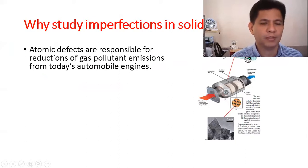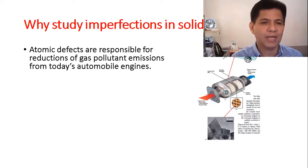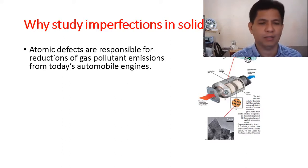So why do we need to study the imperfection in solids? Although the term imperfection sounds negative, basically the function of some materials depends on the imperfection. One example is the catalyst used in a catalytic converter in automotive vehicles. Atomic defects are responsible for the reduction of gas-produced emissions from today's automobile engines.